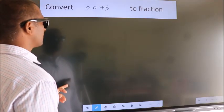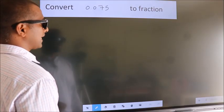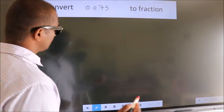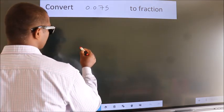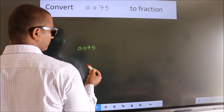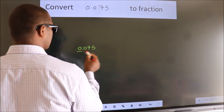Convert 0.075 to fraction. How do we convert this? Given is 0.075. We now take it as by 1.